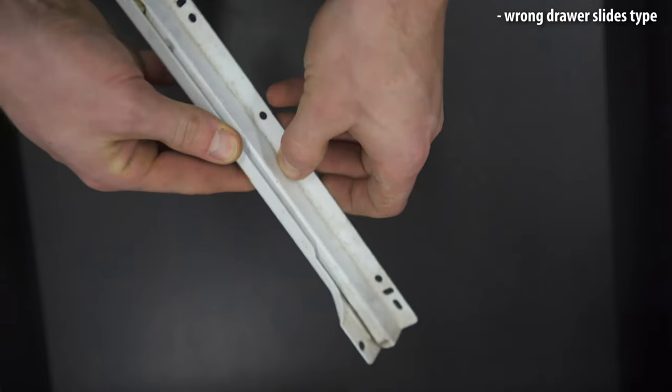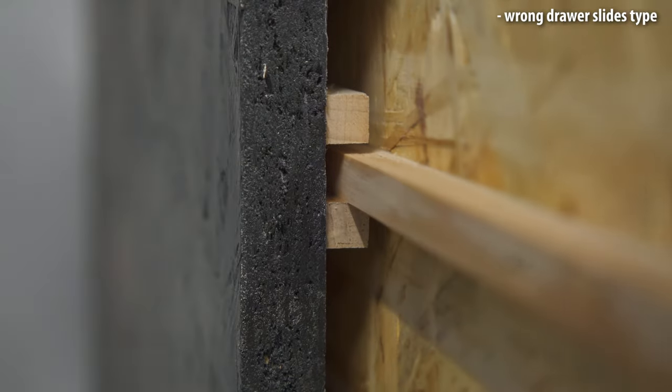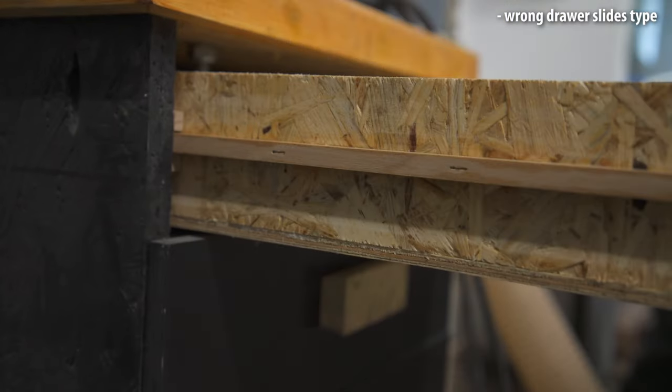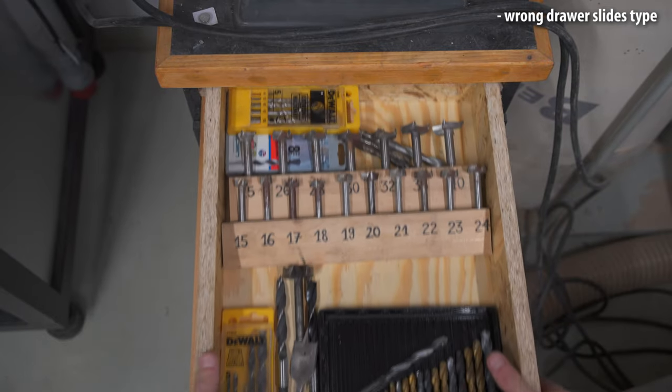If you want to cheap out, ditch commercial slides altogether and build yourself wooden drawer slides. I built them out of hardwood strips which are glued and pinned to the drawer and to the cabinet. After some waxing they operate buttery smooth and won't cost you an arm and a leg.